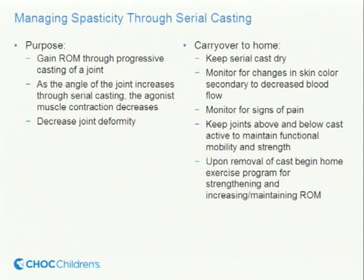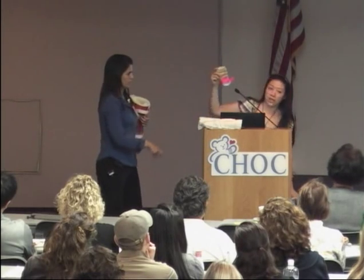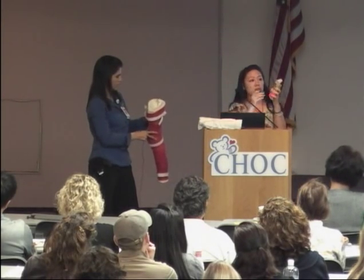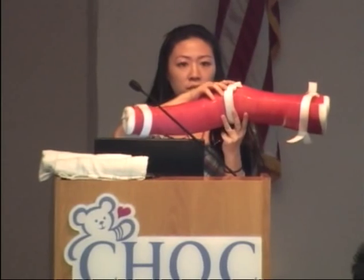Here are some examples. This is an example of an orthotic — it's a solid AFO. And here is a hand splint — you put the hand in a more open position if the hand is really contracted. This is serial casting — this is a serial cast of the knee. Serial casting can occur in different joints of the body.